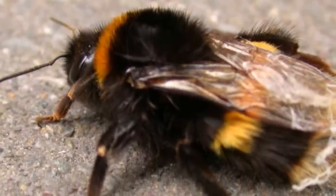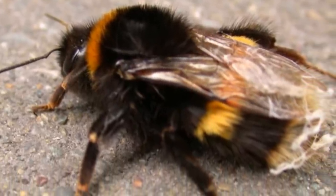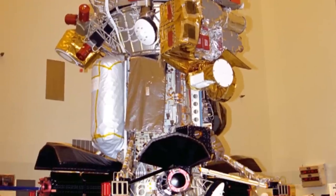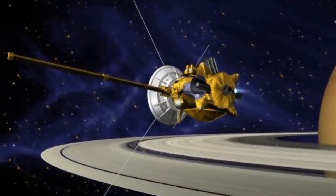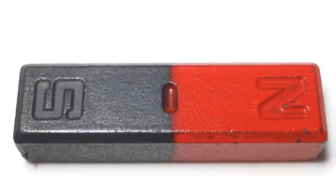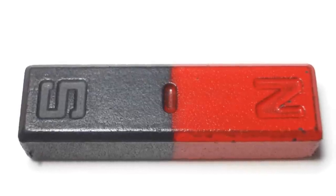For example, scientists can't explain how a bumblebee can fly. Scientists have witnessed unexplained forces acting on space probes. Scientific theories are unable to fully explain the origin of magnetism.